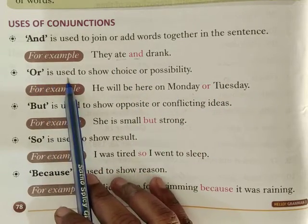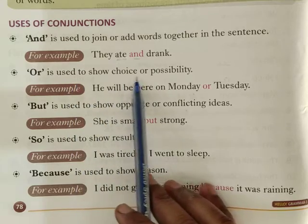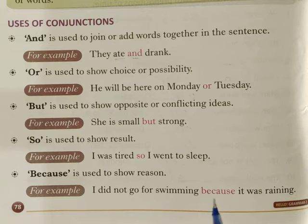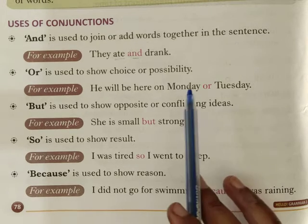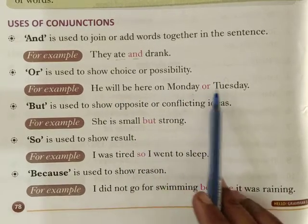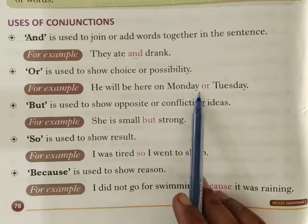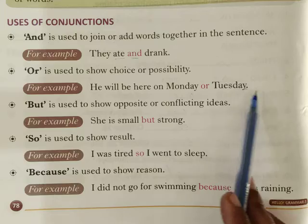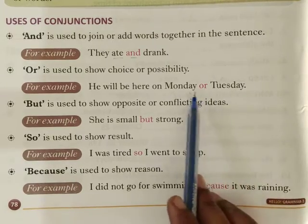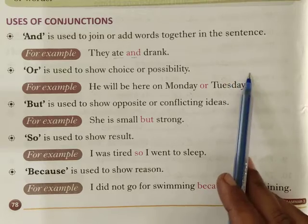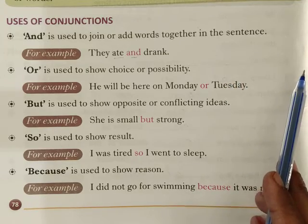'Or' is used to show choice or possibility — where there are two choices or possibilities. For example: he will be here on Monday or Tuesday. Here there are two possibilities — Monday or Tuesday. Another example: will you prefer tea or coffee? When we are giving options or choices, we use 'or'.